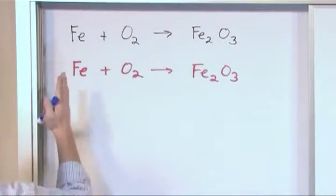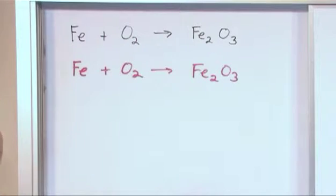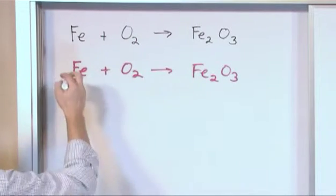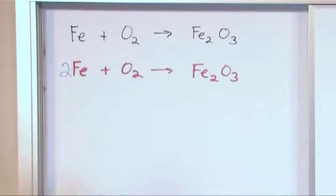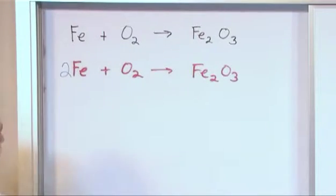So what we're going to do is immediately notice we have one iron and two irons over here, so we need to fix that. So we can easily do that by putting a coefficient of two in front of this because now we have two irons here, we have two irons here. So it seems like we're doing pretty good.